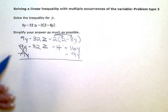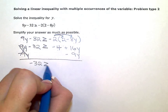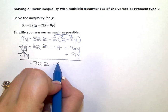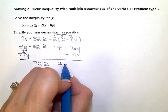When I simplify, I'm left with negative 32 on the left is greater than or equal to negative 4. And then when I combine these two terms, 16y minus 9y is 7y.